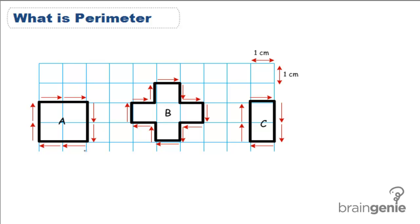In this case, since it's on a grid, we just need to count. The distance around A is 1, 2, 3, 4, 5, 6, 7, 8. So our perimeter of A is 8.